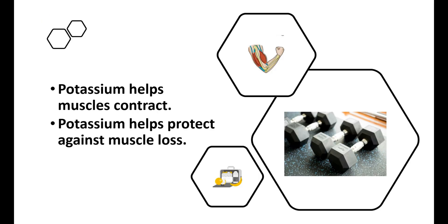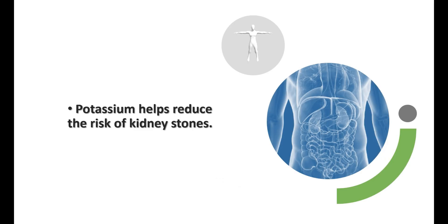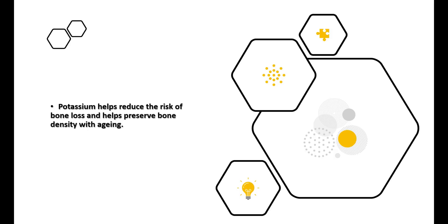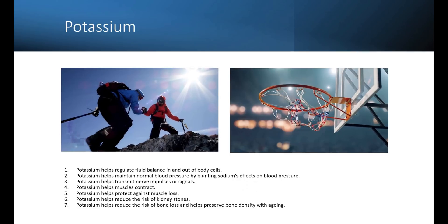Five, potassium helps protect against muscle loss. Six, potassium helps reduce the risk of kidney stones. Seven, potassium helps reduce the risk of bone loss and helps preserve bone density with aging.